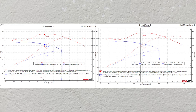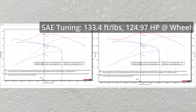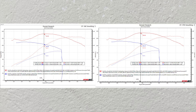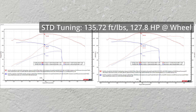The 475 is a great working cam — I've used it a ton. It's very well balanced and makes good power with not many side effects. In SAE, this cam on my bike made 133.4 foot-pounds of torque and 124.97 horsepower. Switching to STD, it made 135.72 foot-pounds of torque and 127.8 horsepower. That's the difference in power between the two correction factors, and you can see this on these sheets.